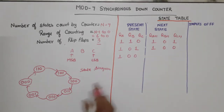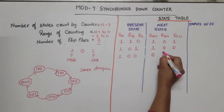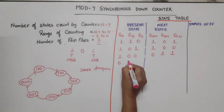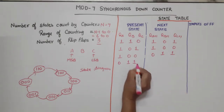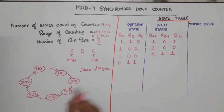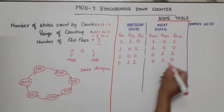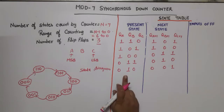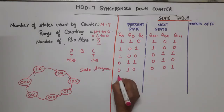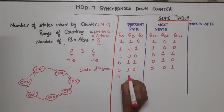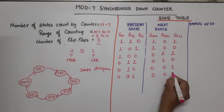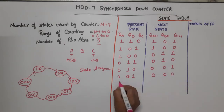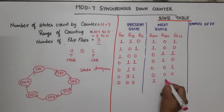Continuing the state table: present state 4, next state 3. Present state 3, next state 2. Present state 2, next state 1. Present state 1, next state 0. Present state 0, next state is 6.